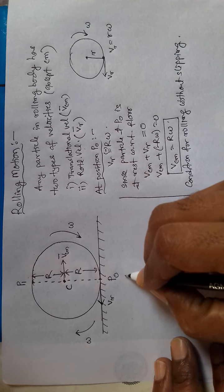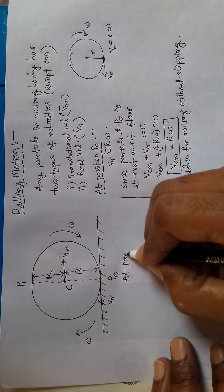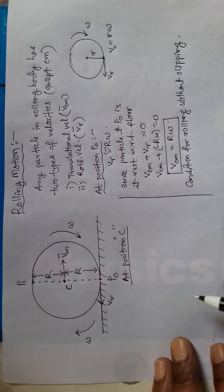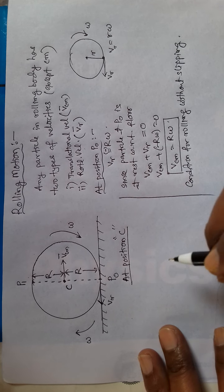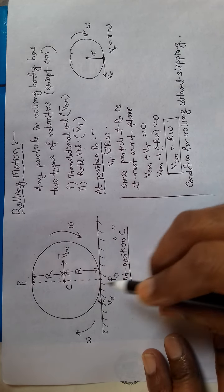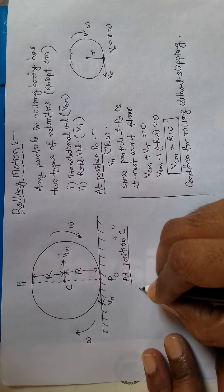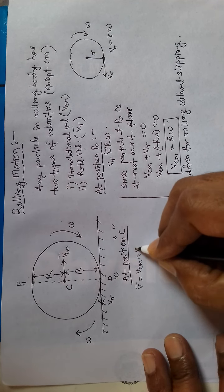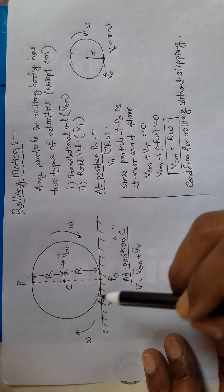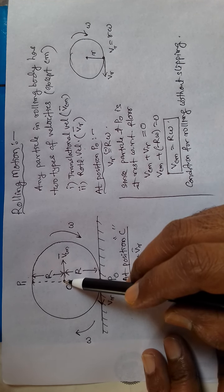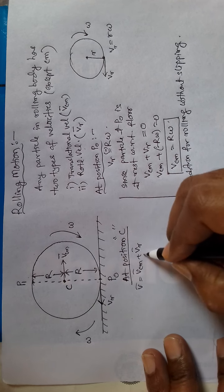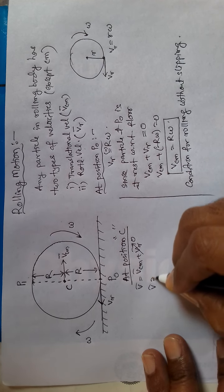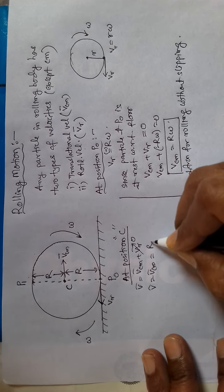Now let us consider position C. At position C, which is the center of mass, there is no rotational velocity — it has only translational velocity. Therefore, the velocity here is V equals Vcm equals R omega.